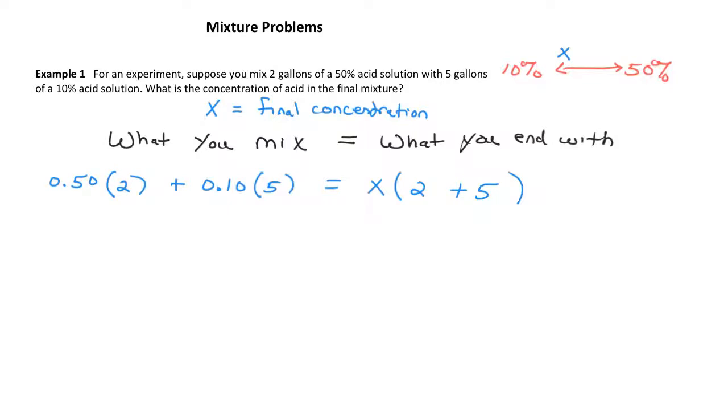My goal is to now ignore the context of this problem and solve this relatively simple linear equation. If I simplify this, 0.5 times two is just one. And then 0.1 times five is 0.5. On the other side of my equation, that's x times seven. On the left, I get 1.5 is equal to 7x. To get x by itself, I'll divide both sides by seven. And I'll do this in my calculator.